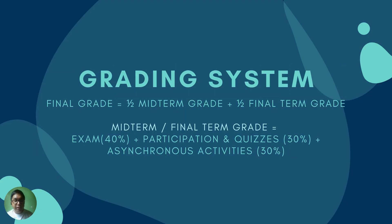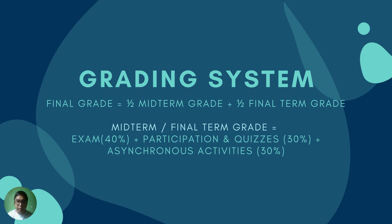Let's now go to the grading system. Your final grade is computed as one-half of your midterm grade plus one-half of your final term grade. Your midterm grade or final term grade is composed of: exam at 40%, participation and quizzes at 30%, and asynchronous activities at 30% — totaling 100%.